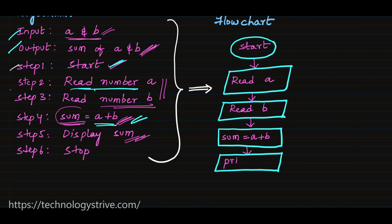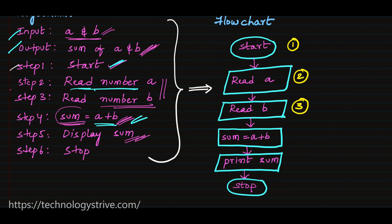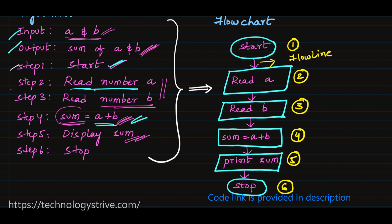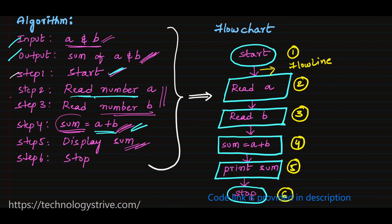We write 'print sum' in the parallelogram. We then end the algorithm using a terminator, represented by an oval shape again — both start and stop always use oval shapes. Between each step we use flow lines to connect them. So we have converted the algorithm to a flowchart using these different symbols. Now let's write code for this using C language.